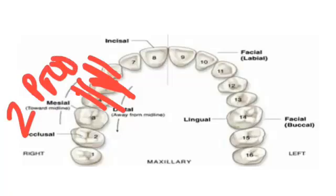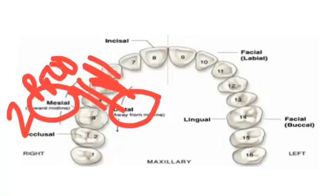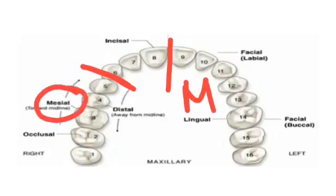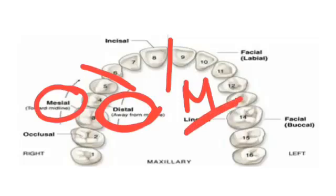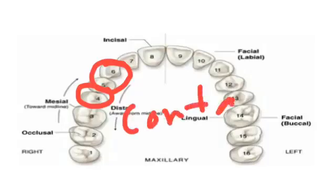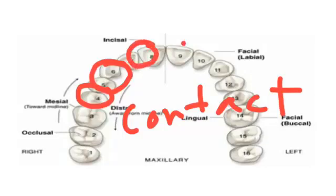Among the proximal surfaces, one is mesial and the other is distal. Which one is mesial and which one is distal depends on the midline. The surface which is nearer to the midline is called the mesial surface, and the surface which is at a little distance from the midline is called the distal surface. Both midline and mesial start with M, so the surface nearer to midline is mesial. The area of the mesial or distal surface which comes in contact with the adjacent tooth is called the contact area.